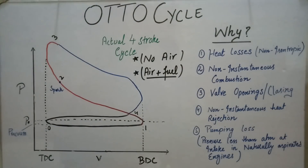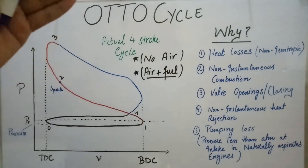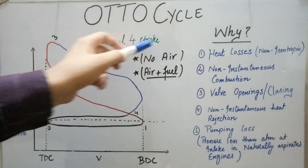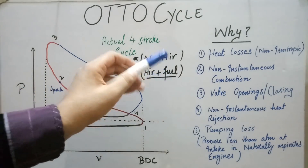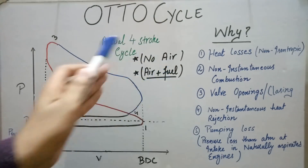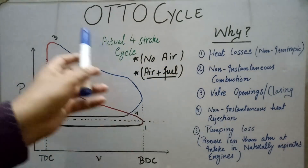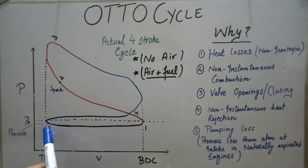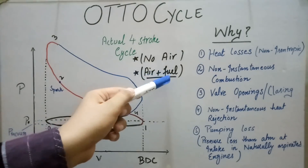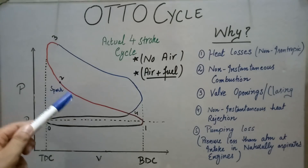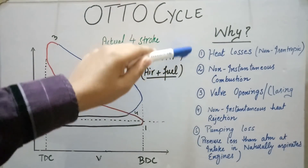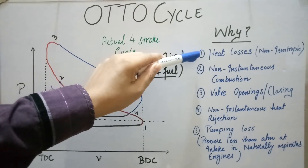Now looking at the actual Otto cycle: the first thing to note is that there is no air solely as a working fluid — instead there is a mixture of air plus fuel such as gasoline, diesel, or CNG. All the processes are the same but in practical form. From 0 to 1 there is intake of the air-fuel mixture, and from 1 to 2 there is non-instantaneous compression because in reality there are heat losses from the walls of the engine and other irreversibilities.